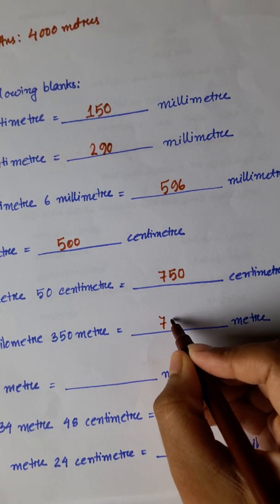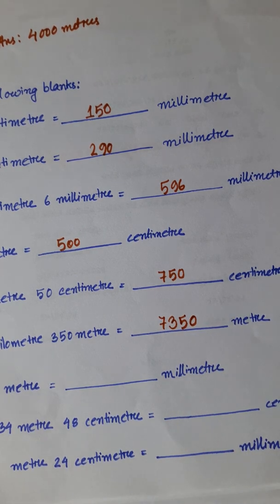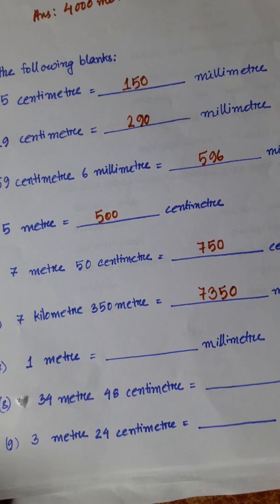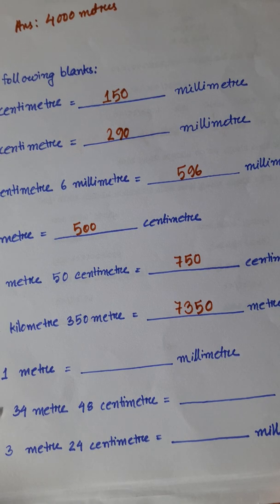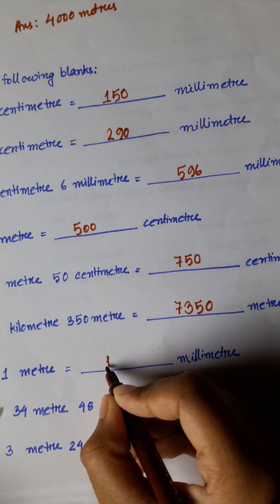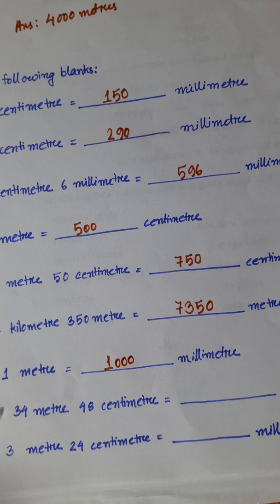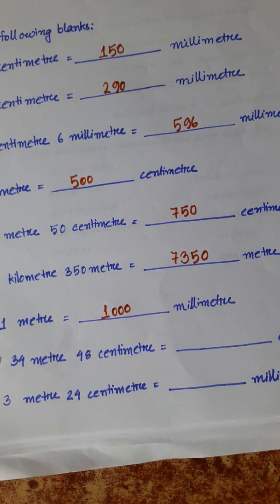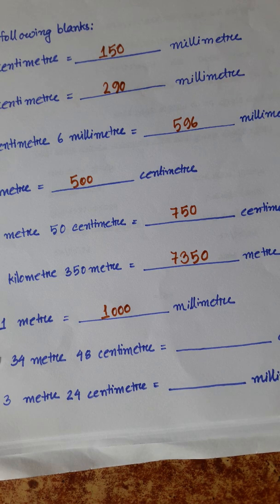Next: 1 meter is equal to dash millimeters — 1 meter is equal to 1000 millimeters. Next: 34 meters 48 centimeters is equal to how many centimeters? 1 meter is equal to 100 centimeters, so 34 meters is equal to 34 into 100, that is 3400 centimeters, plus 48.